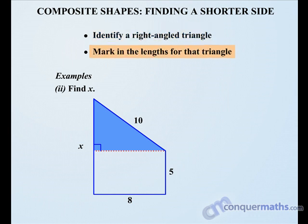Now let's mark in the lengths for this triangle. That distance there is 8. This distance here is a little bit harder to work out. What we're going to do is let it be M and let's find that firstly.